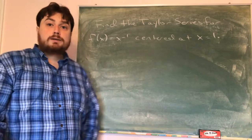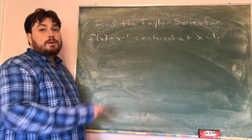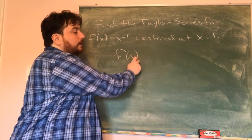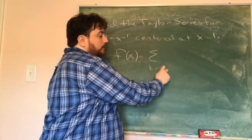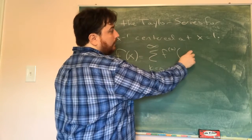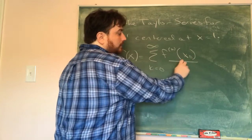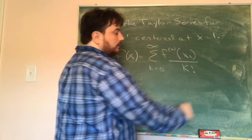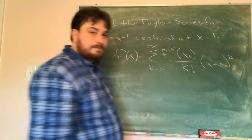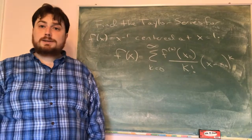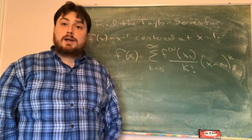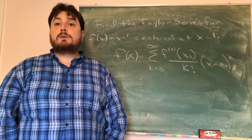Before we get started, I want to recall what a Taylor series is going to be. The Taylor series for f of x is the sum from k equals 0 to infinity of the k-th derivative at my center point — I'll call it x-naught — divided by k factorial, times x minus x-naught to the k. We'll combine everything together to figure out what our Taylor series will be.